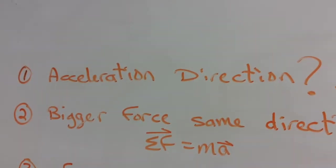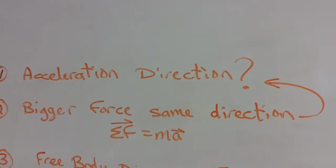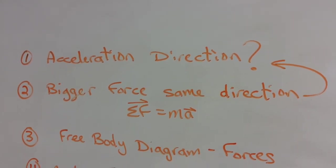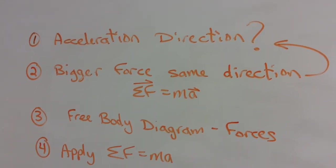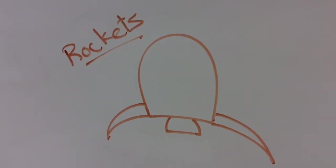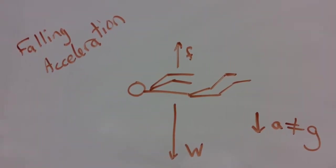All right, quick summary tips. We're almost there at the end. So first thing you should do, really pay attention to the direction of acceleration, not velocity. Bigger force has to be in the same direction as the acceleration along with the net force. Use a free body diagram and then apply Newton's second law. And this applies to rockets, helicopters, objects falling with friction, and elevators.